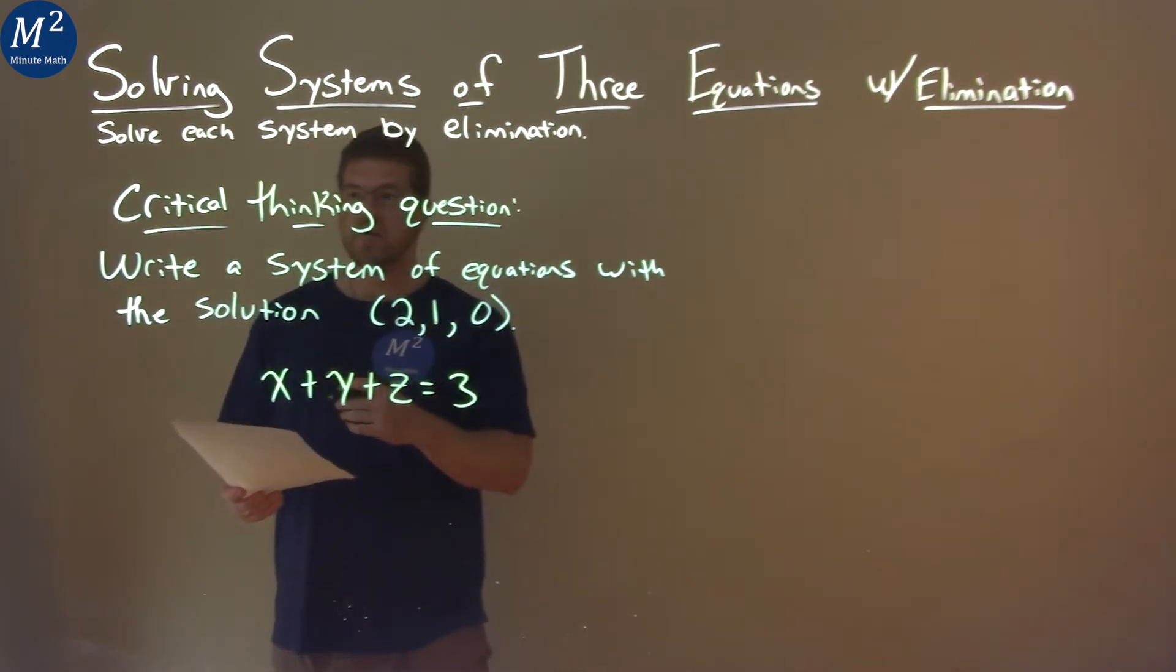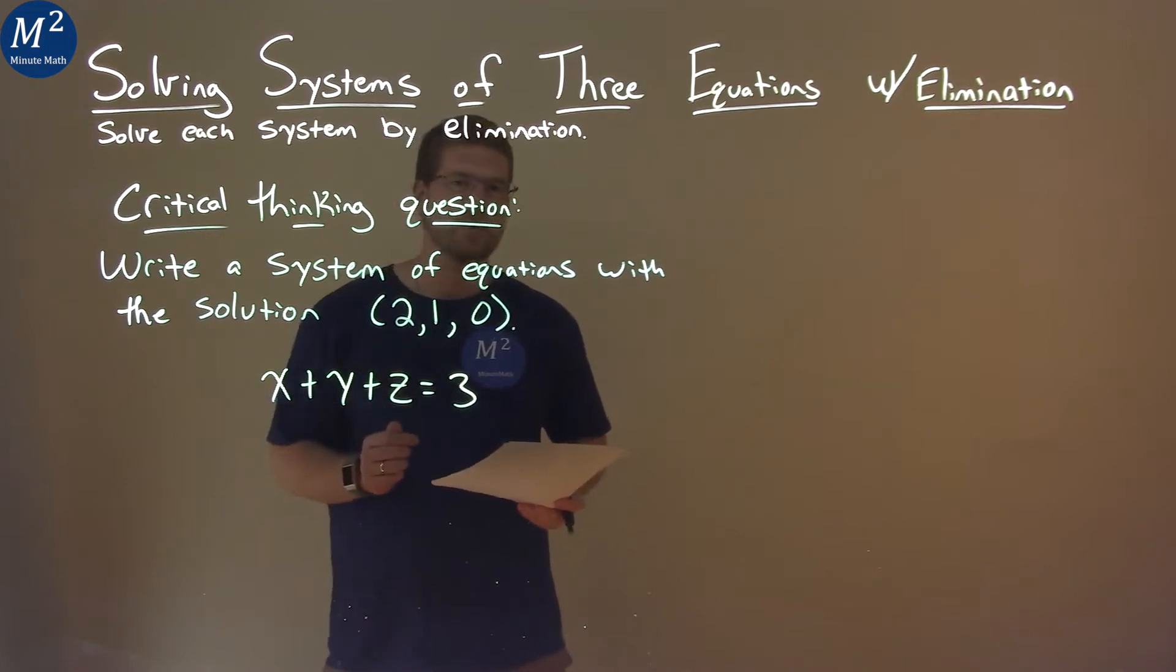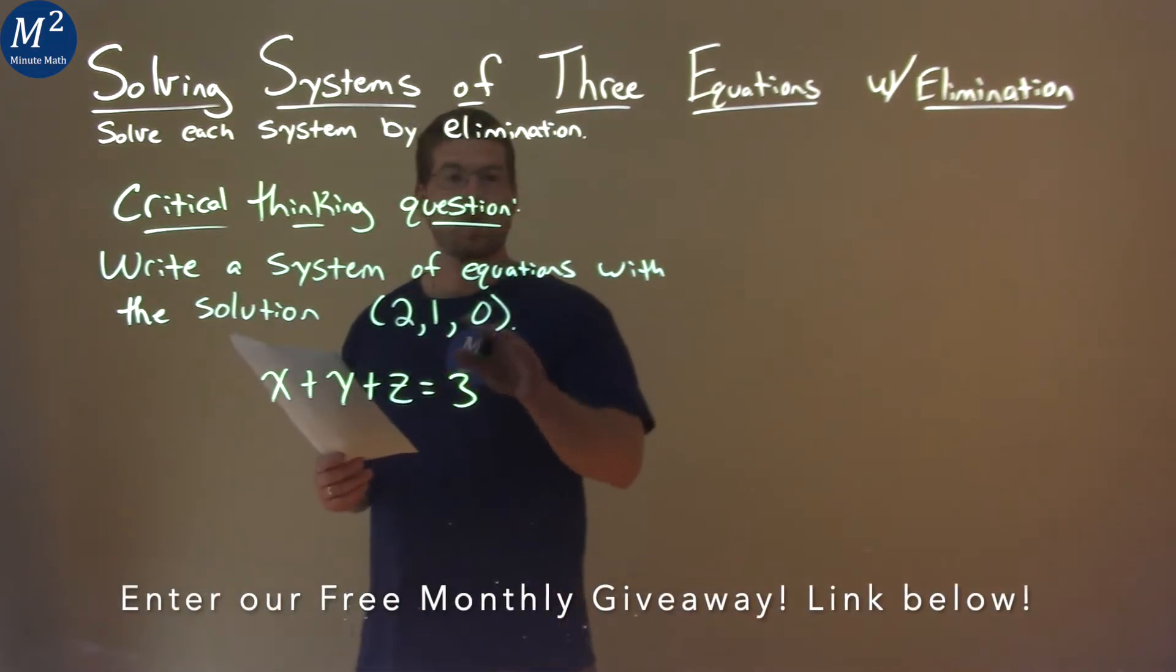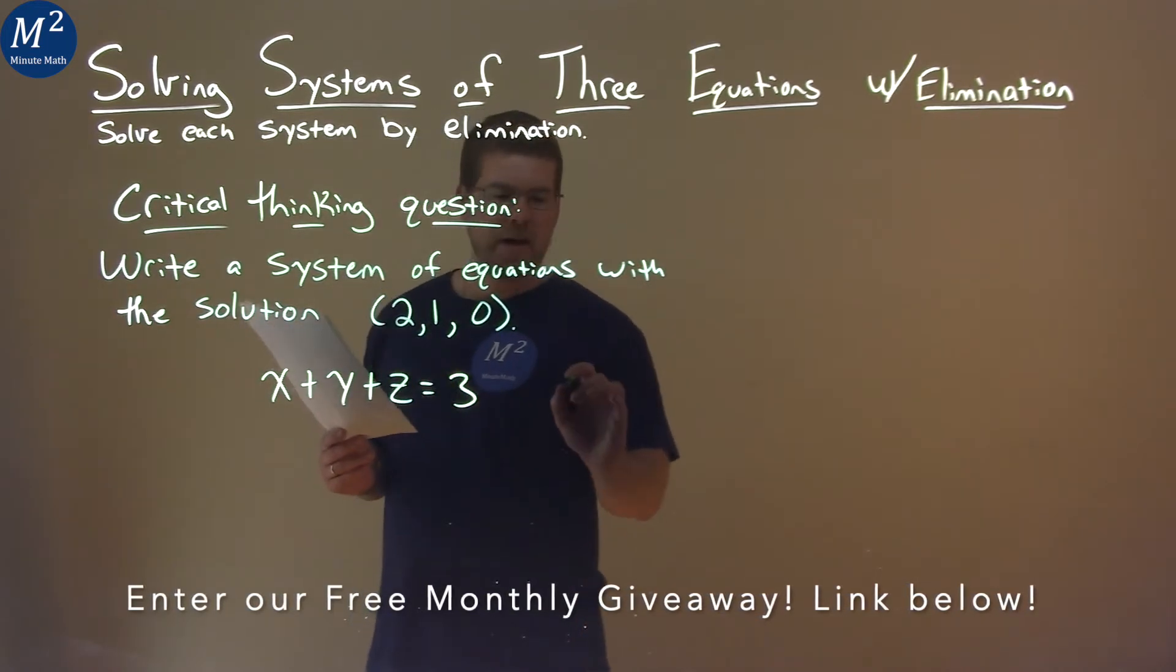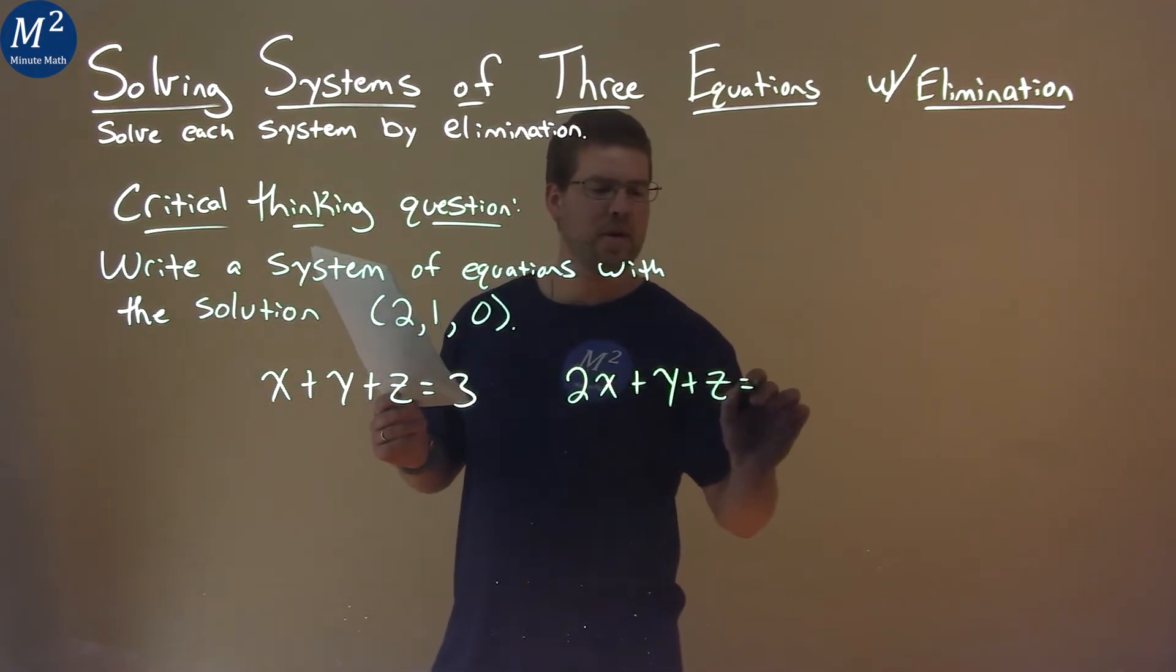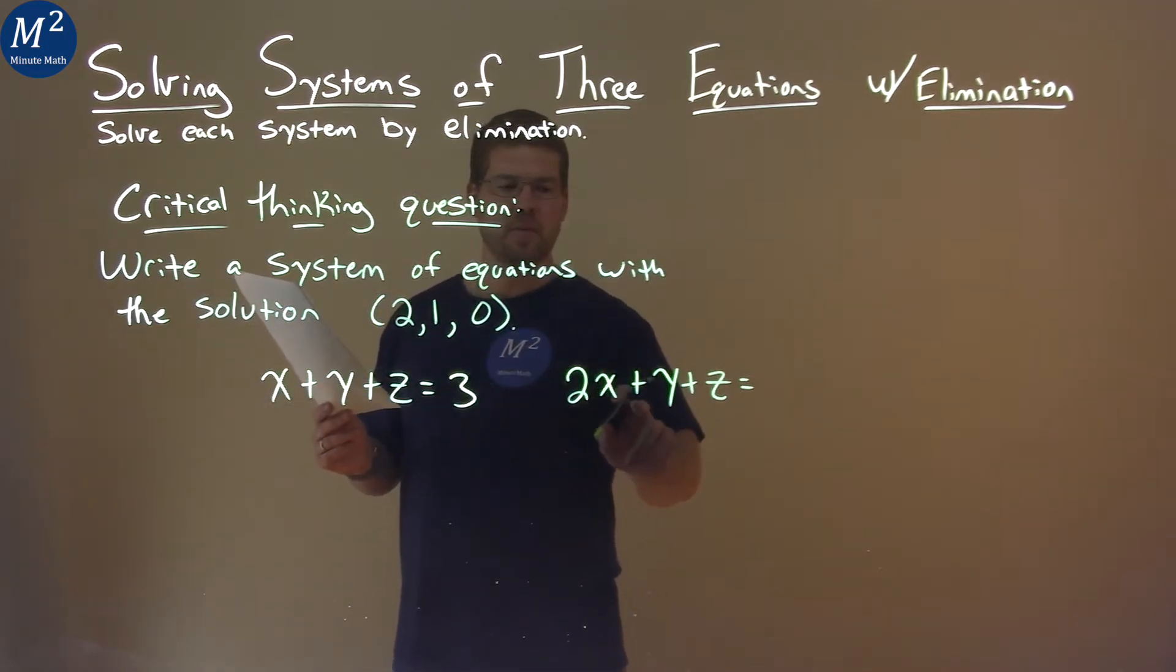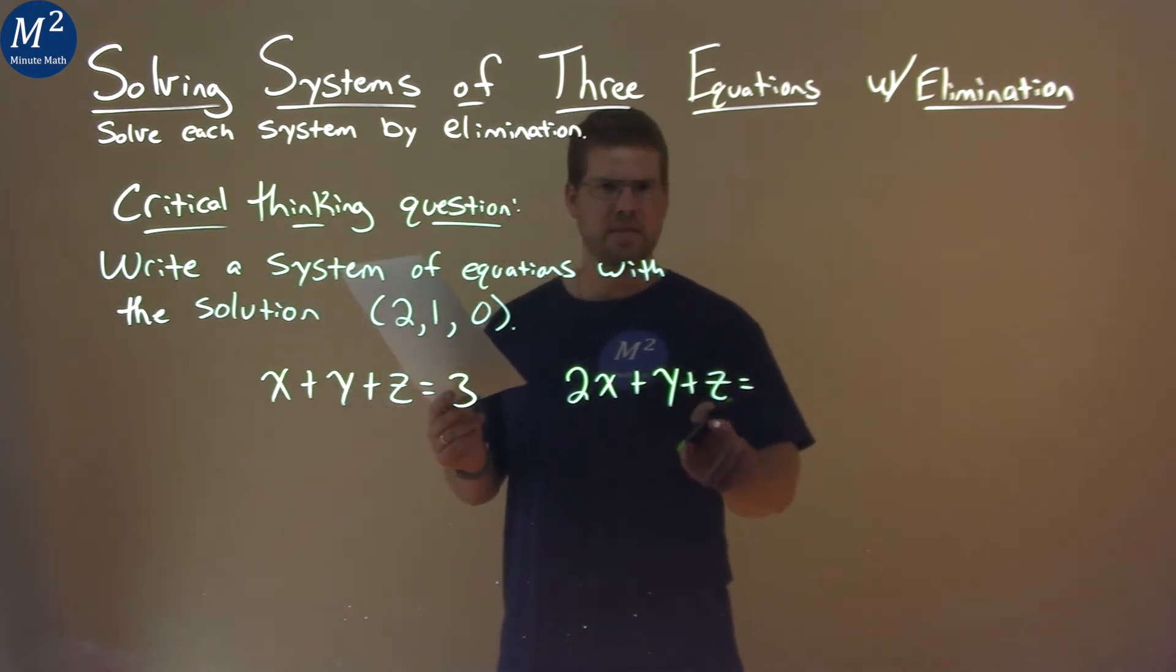We have one equation that works for the solution, but there's many solutions for that equation for x, y, and z that work. So let's find another equation that also has 2, 1, and 0. If I have 2 times x plus y plus z, well, what does that equal? If x is 2, 2 times 2 is 4, plus 1y is 5, plus 0 and z is still 5, and so we have 5 right there.